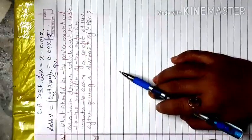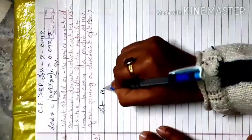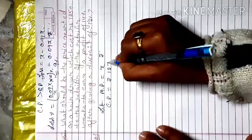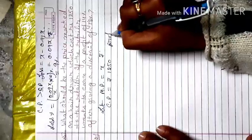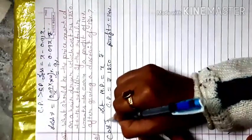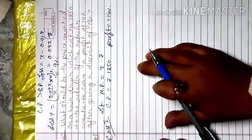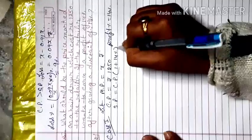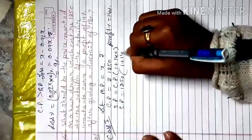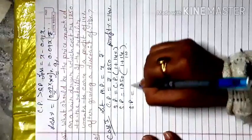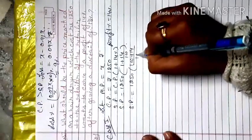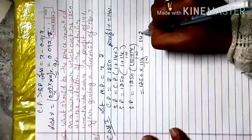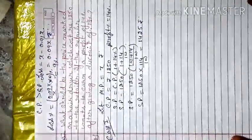Case 1 — finding SP from cost price: SP = CP × (1 + 14/100) = 1250 × (114/100) = 1250 × 114/100 = ₹1425. So the selling price based on profit is ₹1425.